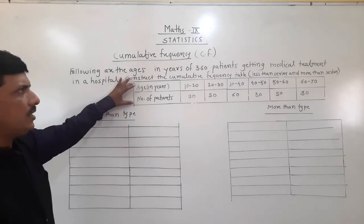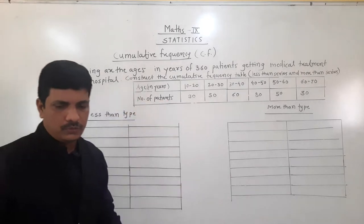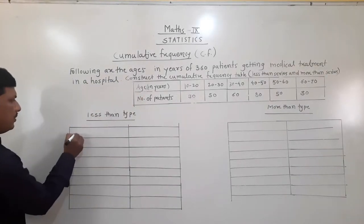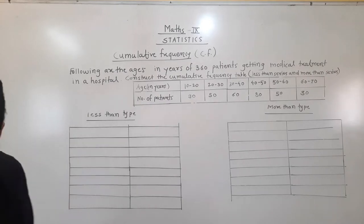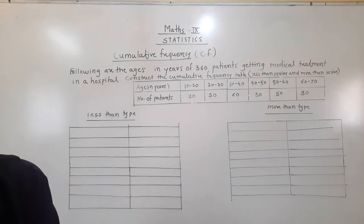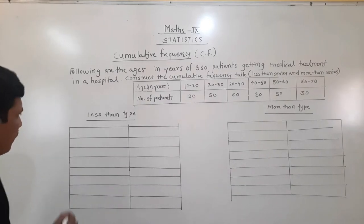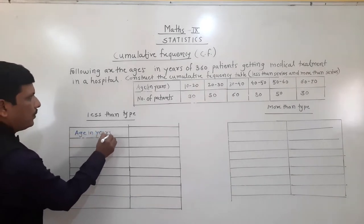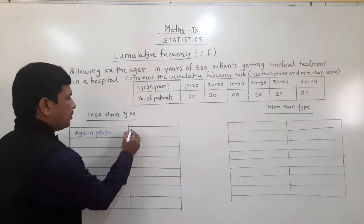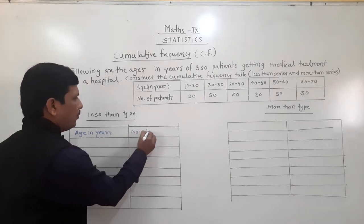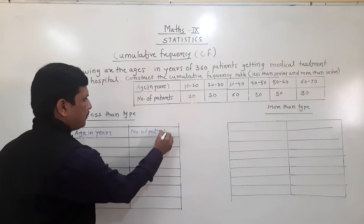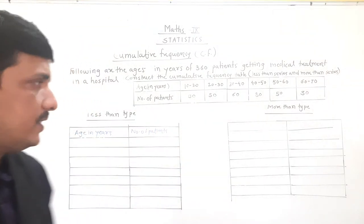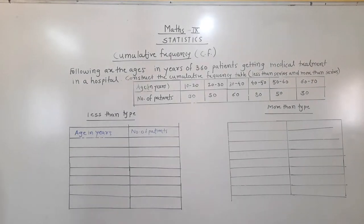The data given is age in years and number of patients. So in the first column we will write age in years, and in the second column, number of patients. First we will see what is less than type and how to prepare this table.